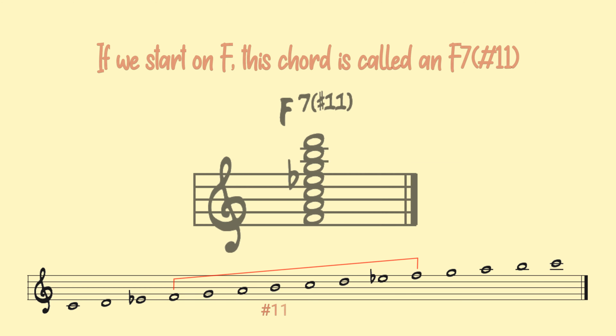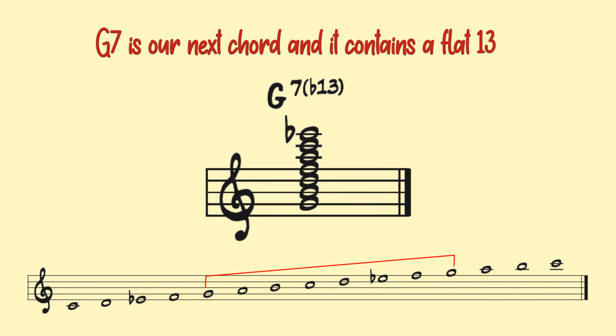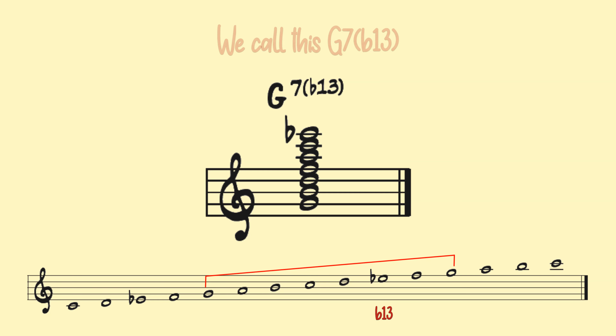If we start on F, this chord is called an F7 sharp 11. G7 is our next chord and it contains a flat 13. We call this G7 flat 13.